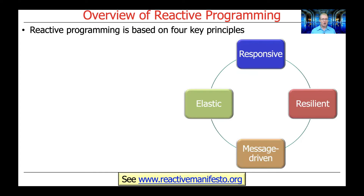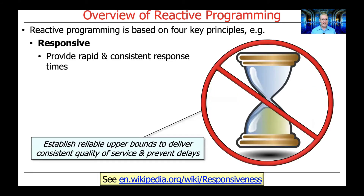Reactive programming is based on four key principles documented in the Reactive Manifesto. One of the key principles is responsiveness — the idea is to provide rapid and consistent response times. You don't want to delay users or defer them getting information, so you want to establish fairly reliable upper bounds needed to deliver consistent quality of service and prevent user disruption like the dreaded hourglass or spinning wheel that you'd sometimes see on Apple or Windows computers.